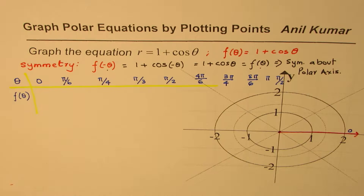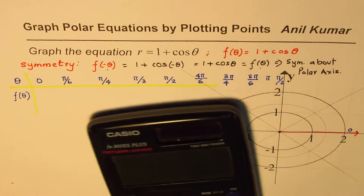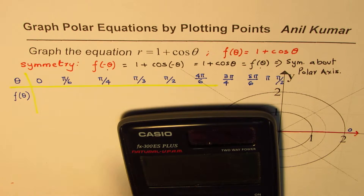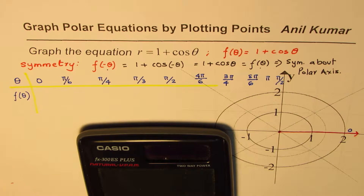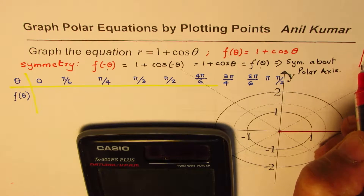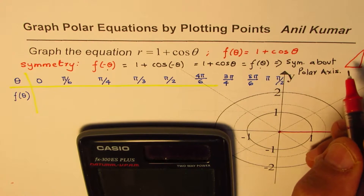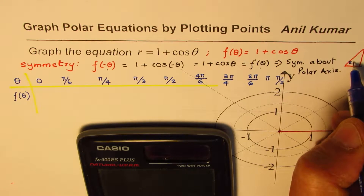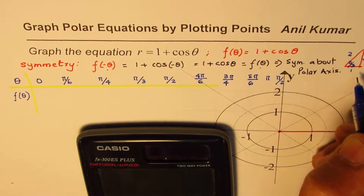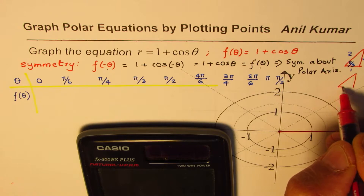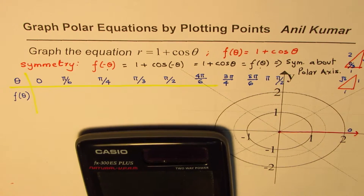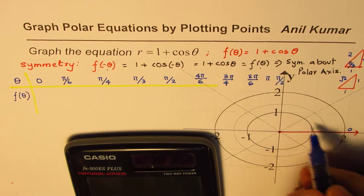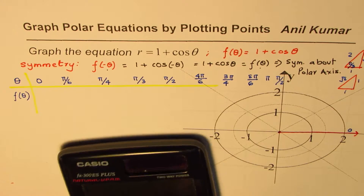We can use the calculator — the setting should be in radians. We could also use special triangles. For the pi by 3 triangle we know the sides are 1, 2, and root 3; for pi by 4 it is 1, 1, and root 2. Cos of 0 is 1 and cos of pi by 2 is 0, so those are straightforward.